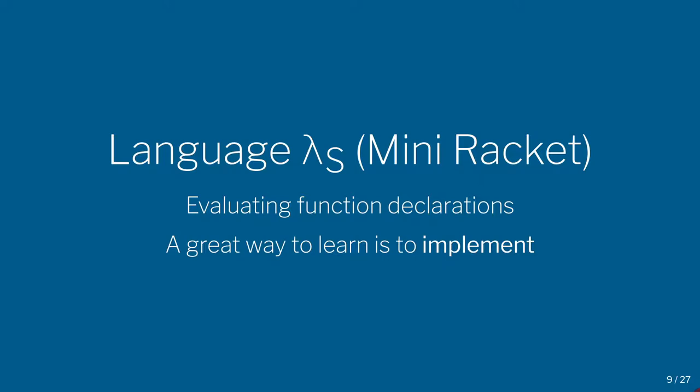We're now going to learn a language called Lambda S, which is short for Mini Racket. What we'll learn in today's set of videos is really how one would evaluate function declarations. You've seen this informally, but now I want to give you a formal mathematical specification and an informal description of the algorithm, so that you can implement it yourself. This course is all about teaching you various different features of programming languages, and we're going to learn them in full detail by implementing them.